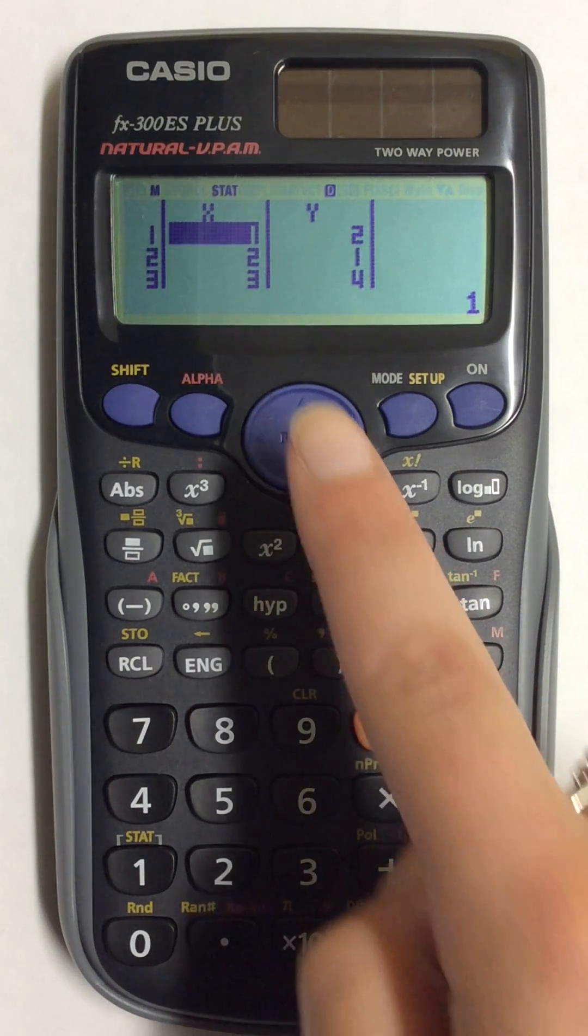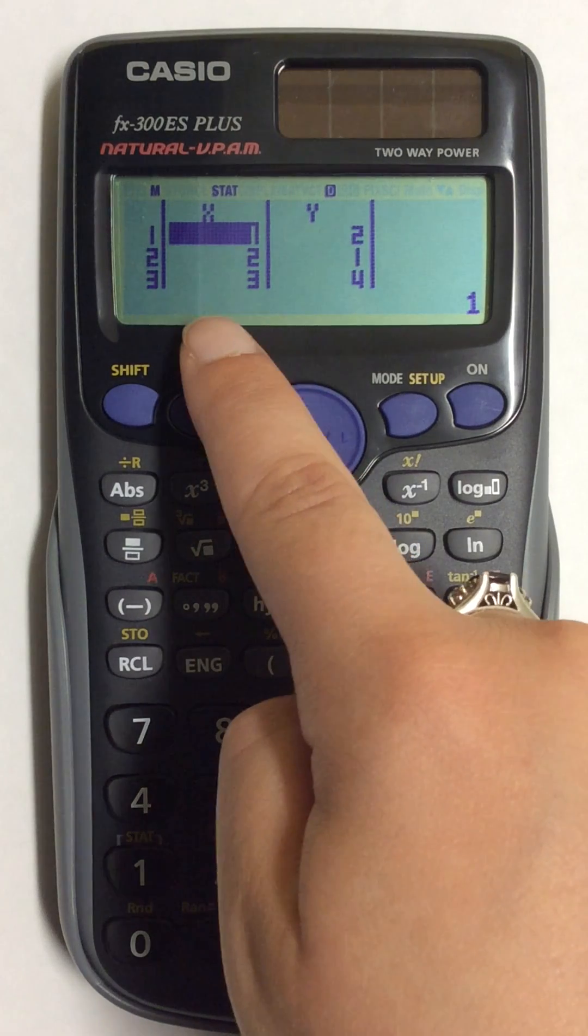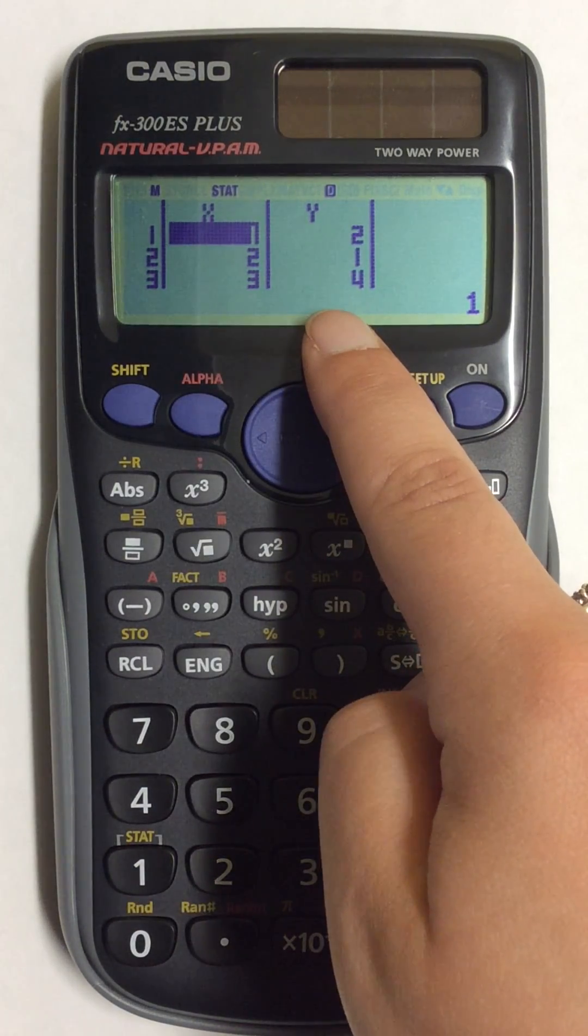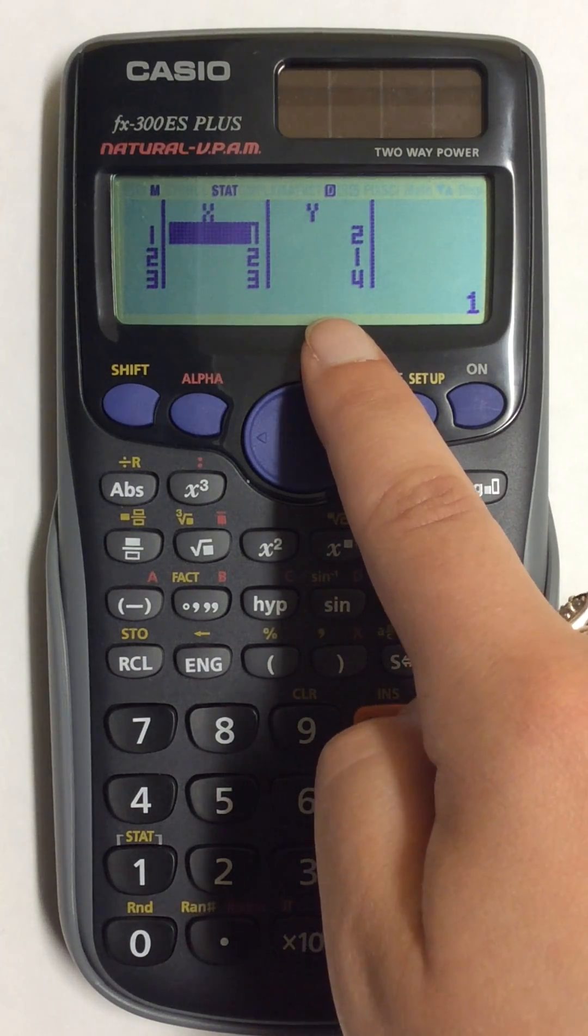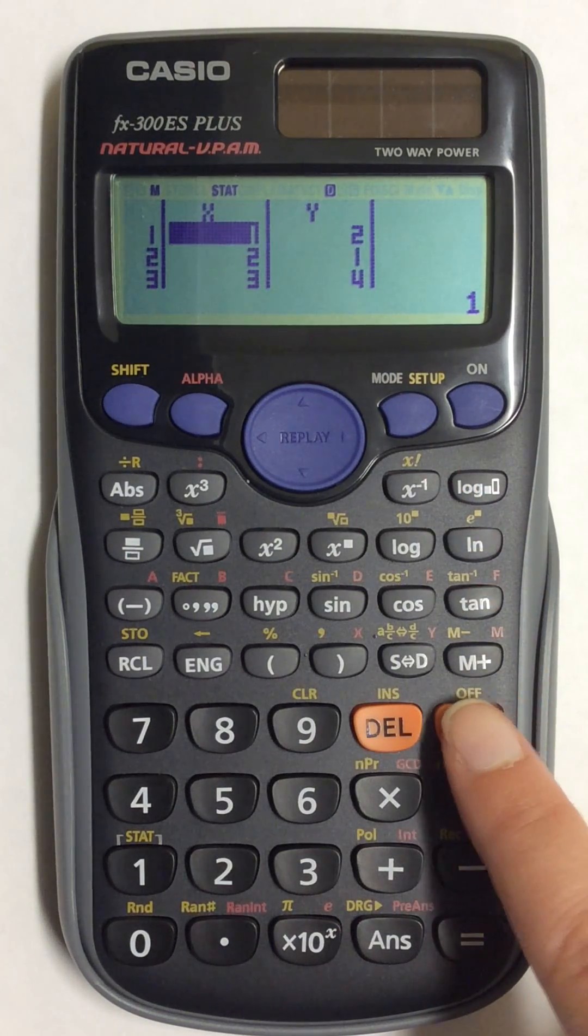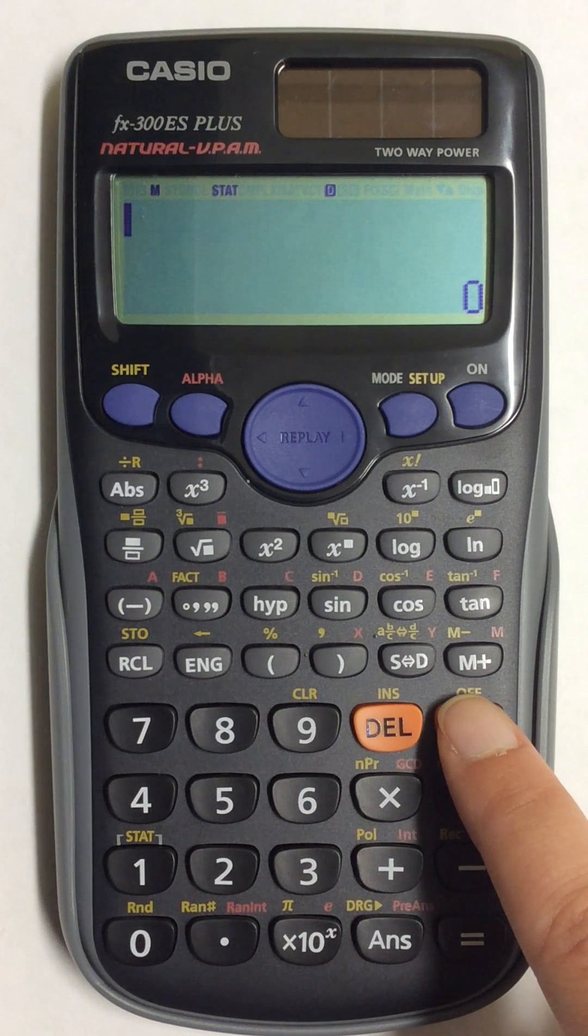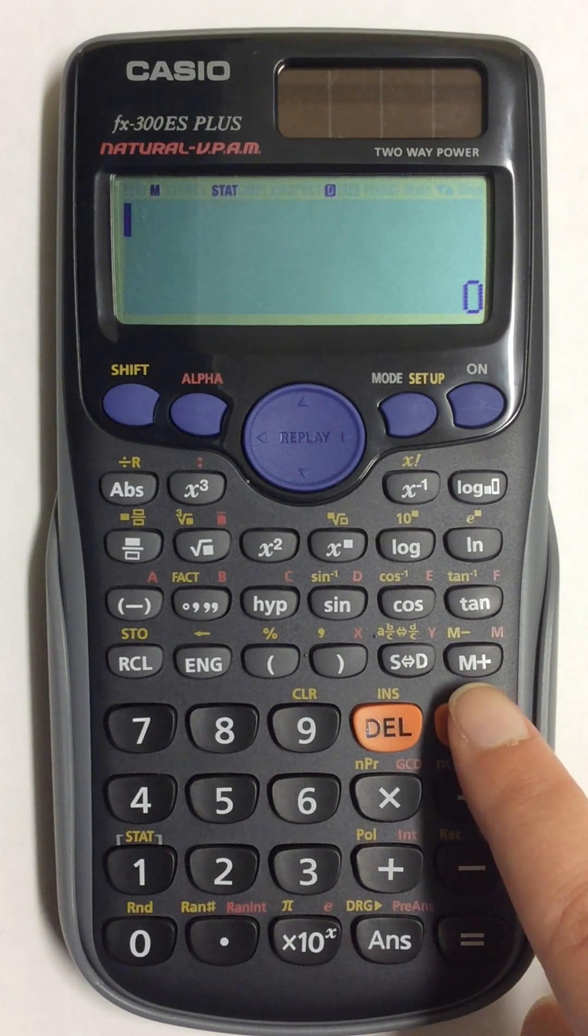To begin, I already have values plugged into my scientific calculator. So to save these values, I'm going to press AC. This will keep and save all of my values in my calculator.